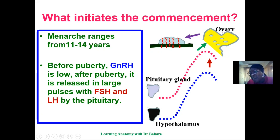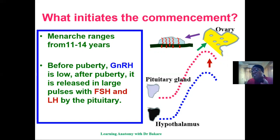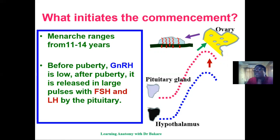The ovary is stimulated to begin follicular growth, so that follicles will start to grow and finally produce a mature egg, followed by ovulation. After ovulation, the egg is released into the lumen of the fallopian tube so that fertilization can take place.